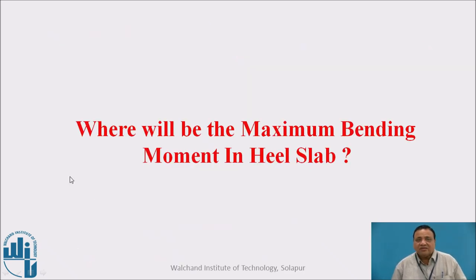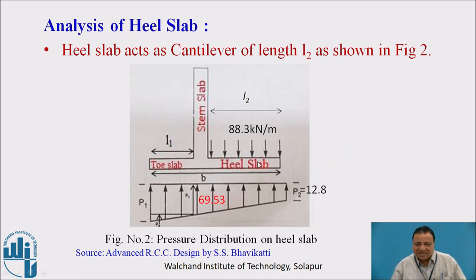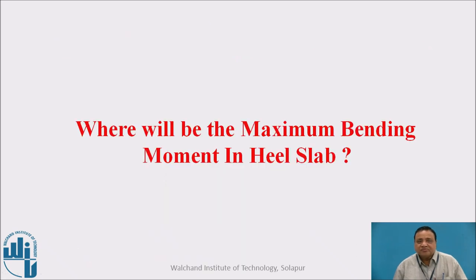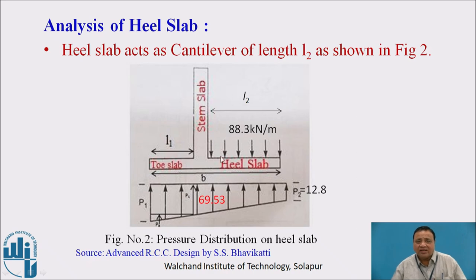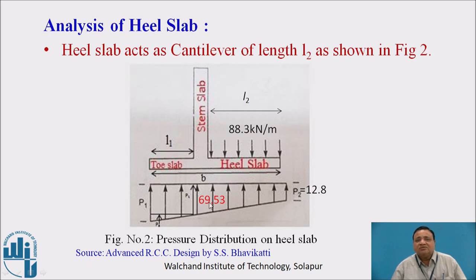The maximum bending moment in the heel slab will be at the inner face of the stem slab, since the heel slab acts as a cantilever. At this location, the cantilever slab is subjected to 88.3 kN per meter as the weight of earth, and a bottom upward pressure of 12.8 kN per meter. The net downward force produces maximum bending moment at the inner face of the stem slab.